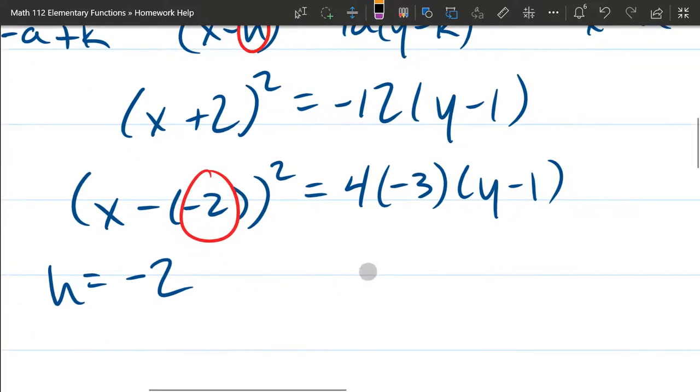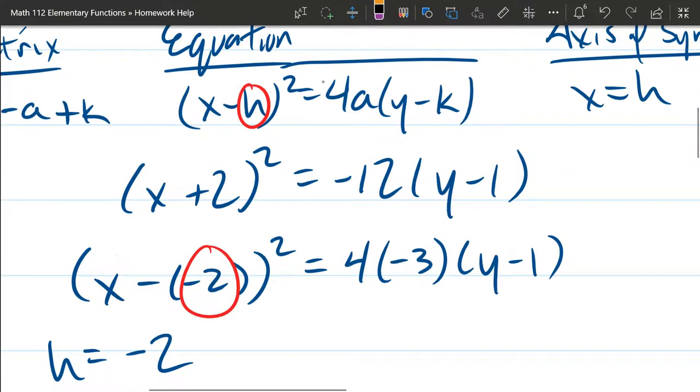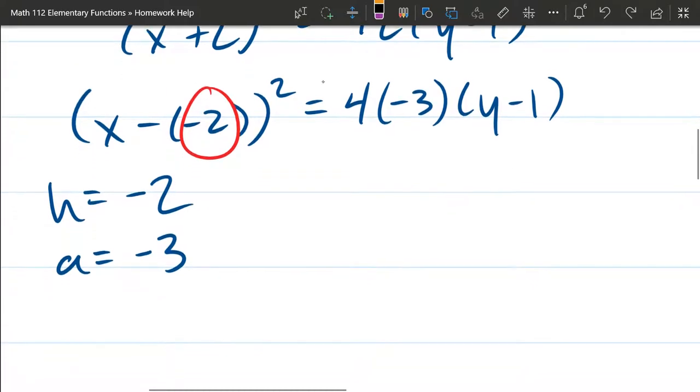Next up, we already looked at a, so that should be pretty obvious. a is negative 3. And the last part right here, what's k? k is 1. So that was pretty straightforward right there.